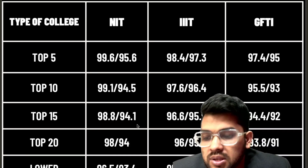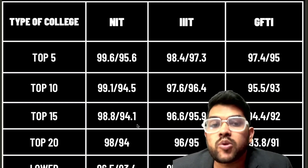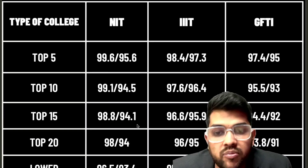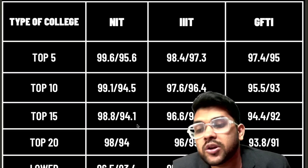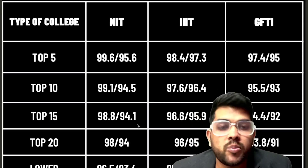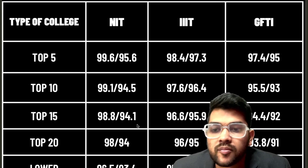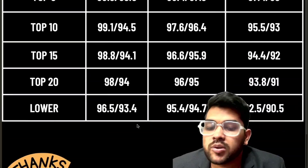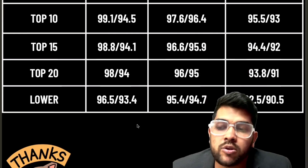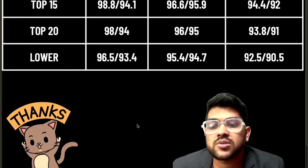For any NIT with CSE you need 96.5 percentile. I am providing percentile because it remains consistent across both attempts — in the first attempt you can achieve it with fewer marks, while in the second attempt you need a bit more due to higher competition, but you must achieve this percentile regardless. For any IIIT: 95.4 for CSE and 94.7 for lower branch. For any GFTI: 92.5 for CSE and 90.5 for lower branch. Please subscribe to the channel for college-wise and NIT/IIIT/GFTI-wise detailed information coming soon.